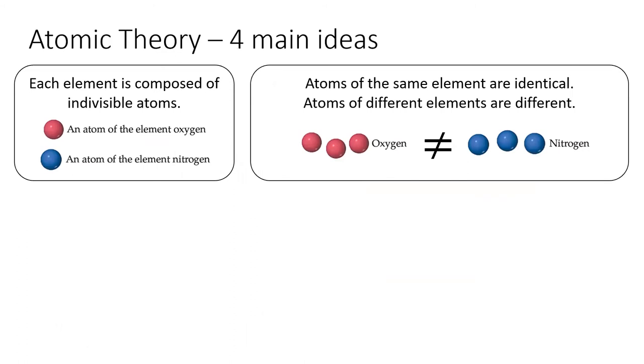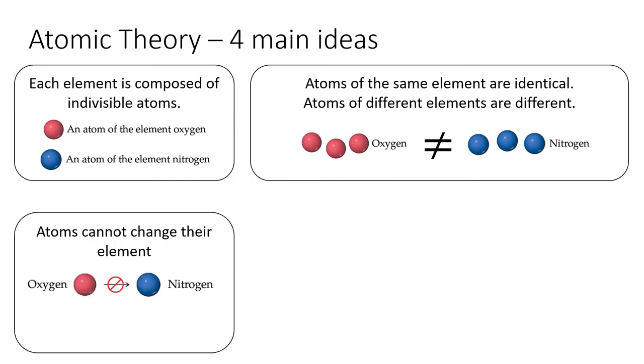Next, atoms of a given element are identical. Atoms of different elements are different. Third, atoms cannot change from one type to another.